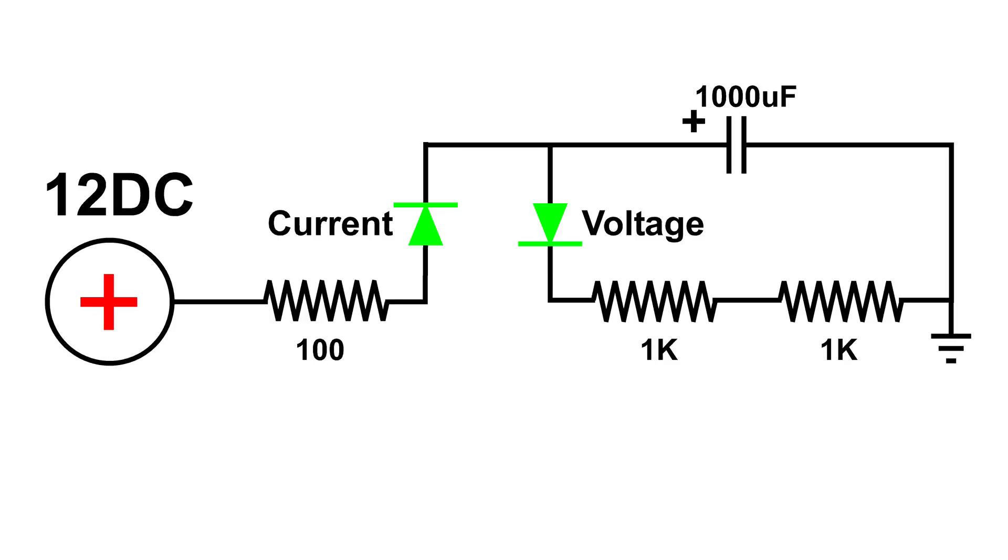We have two diodes and I've labeled one current and the other one voltage. The current diode is in series with everything, and the voltage diode is across the capacitor that we're going to charge.